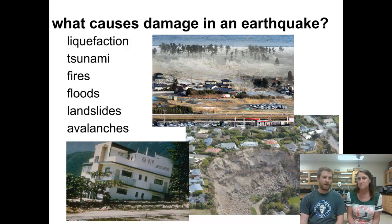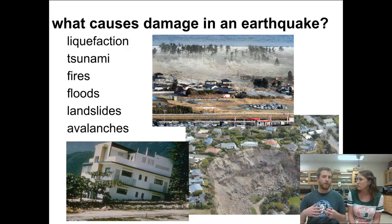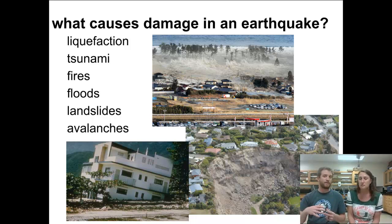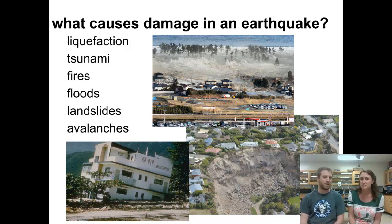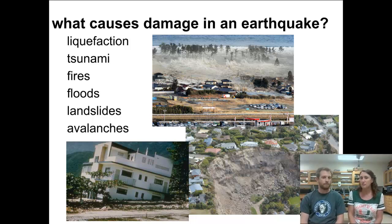Tsunamis are probably the damage type you're most familiar with. Anytime you release a lot of energy near a body of water — often underwater — you generate a wave that goes out in all directions. When that wave hits land, it releases a lot more energy, with waves up to 30 feet high that cause an amazing amount of damage. Something like the majority of Earth's population lives within a few miles of a coastline, making tsunamis a big problem. We'll look at this in depth next week when we examine a tsunami that happened a few years ago.